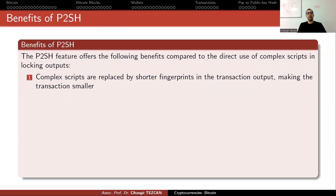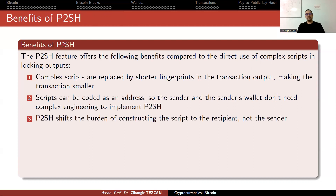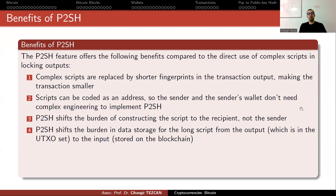The pay-to-script hash feature offers the following benefits compared to the direct use of complex scripts in locking outputs. Complex scripts are replaced by shorter fingerprints in the transaction output, making the transaction smaller. Scripts can be encoded as an address, so the sender's wallet doesn't need complex engineering to implement pay-to-script hash. Pay-to-script hash shifts the burden of constructing the script to the recipient, not the sender. It also shifts the burden of data storage for the long script from the output — which is in the UTXO set — to the input stored on the blockchain.